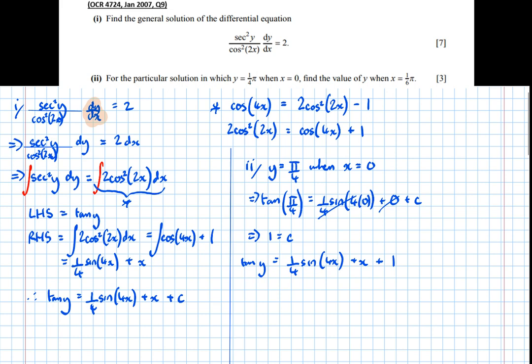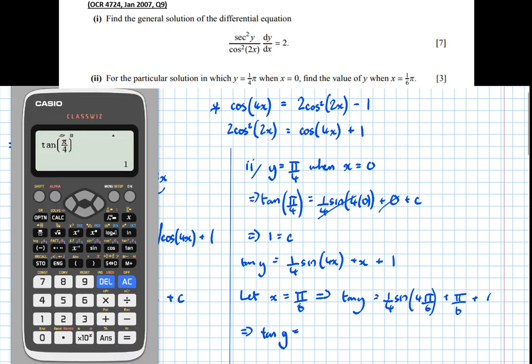So the next part of this question is asking me to find the value of y when x is a 6th pi. Okay, so I'm going to let x equals pi over 6. And that means that tan of y equals a quarter sine of 4 times pi over 6 plus pi over 6 plus 1.